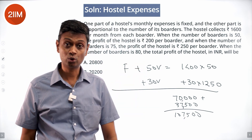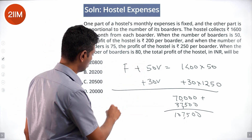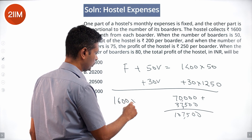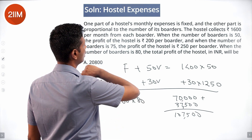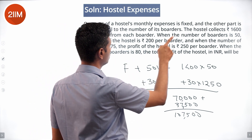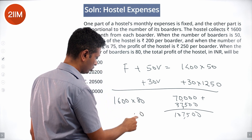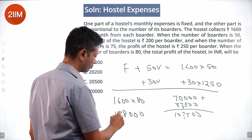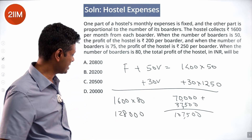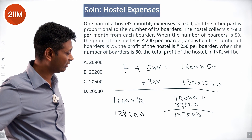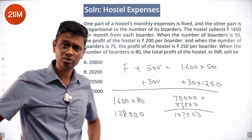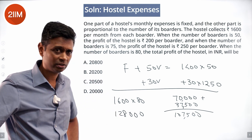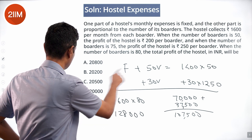When there are 80 students, total revenues will be 1600 times 80, which equals 128,000. Subtracting the total cost: 128,000 minus 107,500 equals 20,500. That is the total profit of the hostel when there are 80 boarders.